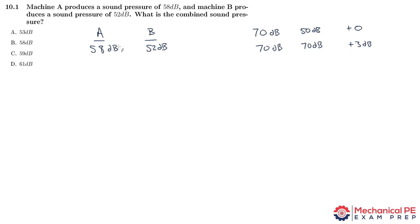Now we'll get to the specifics of this problem. This range is 6. 58 minus 52 is 6, and 6 is between 5 and 9. According to that table, if the difference in sound pressure level is between 5 and 9, then we add 1 decibel.